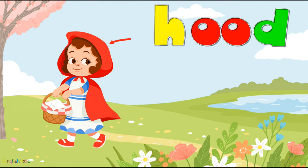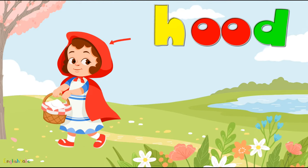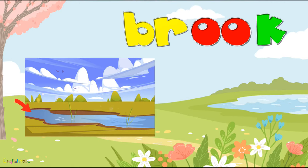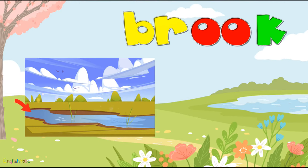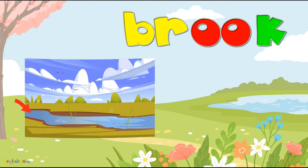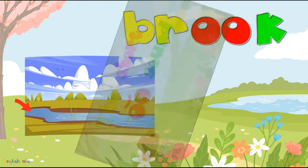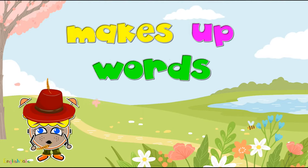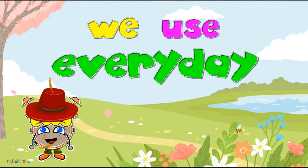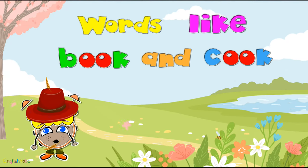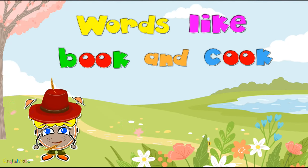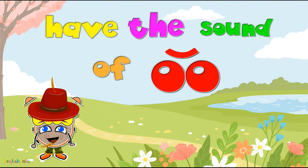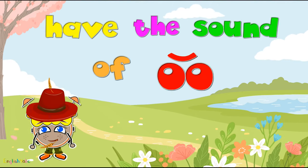Oo - D: Hood. Hood. K: Brook. Brook. The short 'oo' sound makes up words we use everyday. Words like 'book' and 'cook' have the sound of oo, oo, oo.